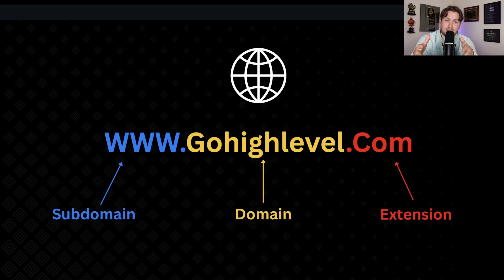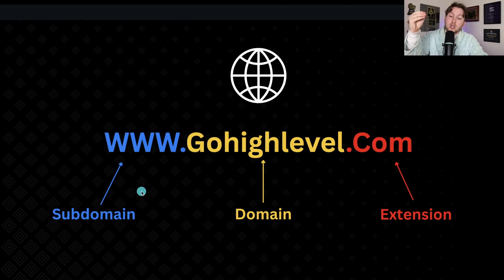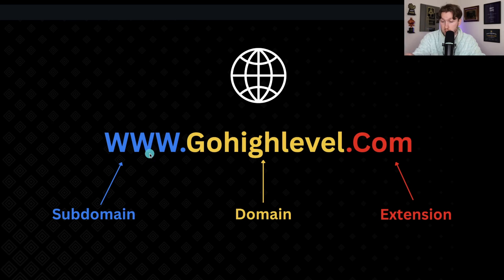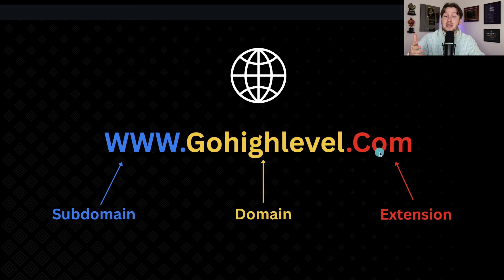The first thing I want to do is break down what a domain is in as simple language as possible. A domain is just an identifier of your site. Subdomains and extensions are basic ways to categorize your site. A subdomain is anything that comes before the name — so you could have 'courses.highlevel' or 'help.highlevel'. The domain itself is the name, like GoHighLevel, DeclanTheWizard, or Amazon.com. The extension is the last part: .com, .co, .ai, whatever you want.